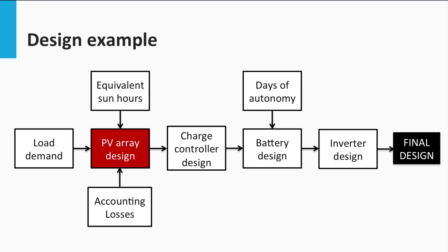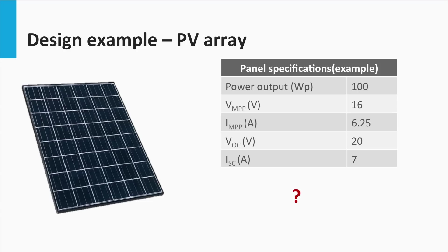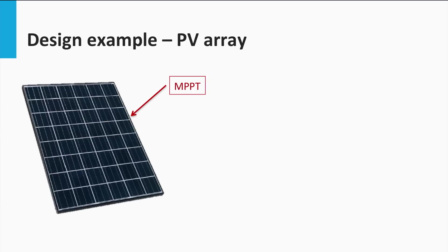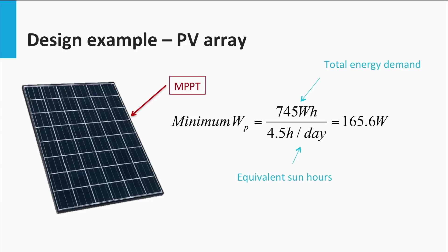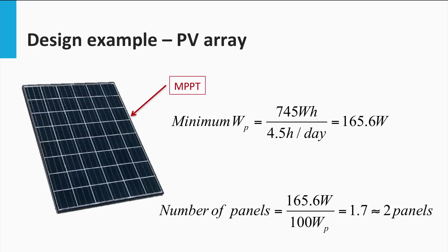Knowing the load demanded at the PV output and the equivalent sun hours, we must now estimate the rated PV power required. A PV panel rated at 100 Wp is available. Assuming the panel operates at its maximum power point, the minimum PV power required is found by dividing the total energy demand at the PV output by the equivalent sun hours, giving 165.6 W. The number of panels is therefore 2, as we always round up to a whole number.